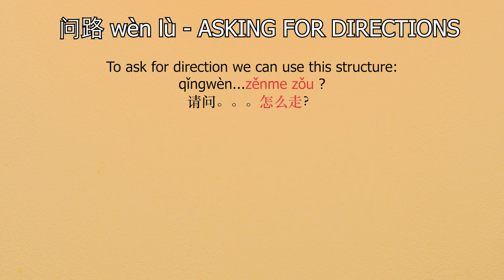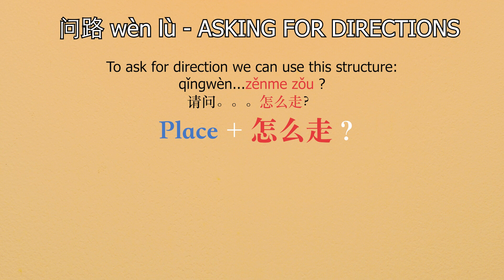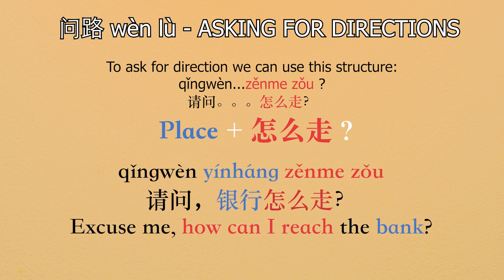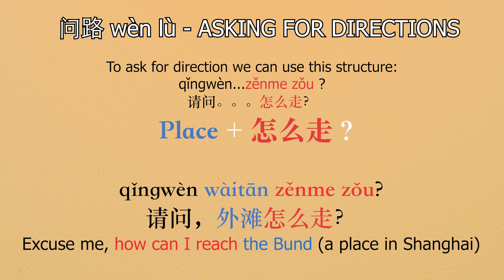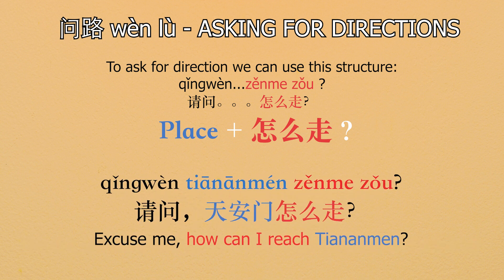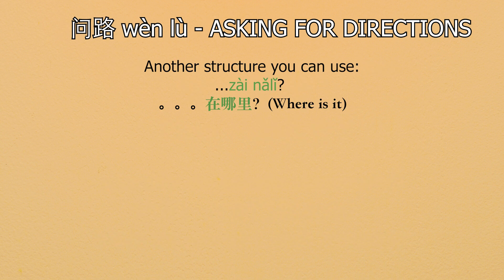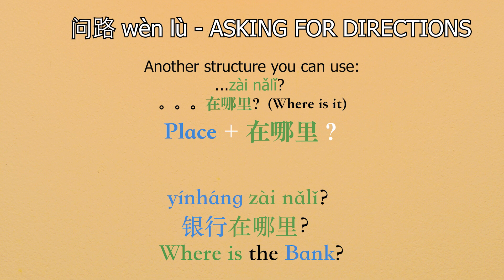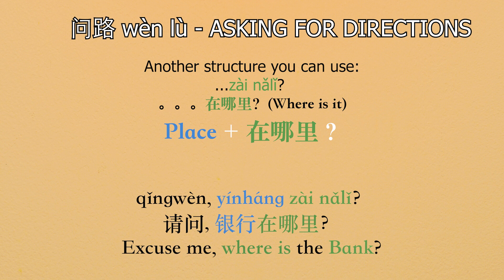Now, let's learn how to ask for directions. To ask for directions, we can use this structure: 请问 plus a place plus 怎么走. For example, 请问银行怎么走, or 请问外滩怎么走 — 外滩 is a place in Shanghai, it's the Bund. Or 请问天安门怎么走. Another way of asking for directions is to use 在哪里 in green. The structure is place plus 在哪里. For example, 银行在哪里, or 请问银行在哪里?